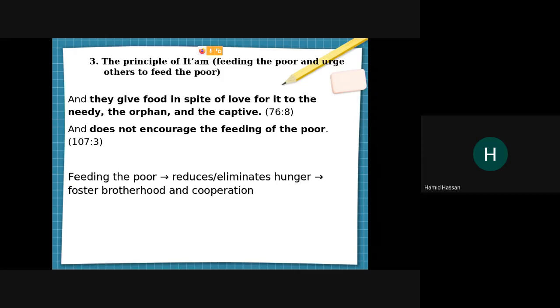Now the third principle is the principle of itam, which is feeding the poor and encouraging others to feed the poor. This is derived from verses in the Quran. Feeding the poor reduces or eliminates hunger, which is one of the goals of SDGs, and it also fosters brotherhood and cooperation. We can establish mechanisms that ensure proper and free supply of food to the needy.